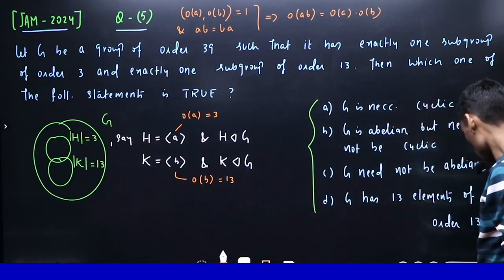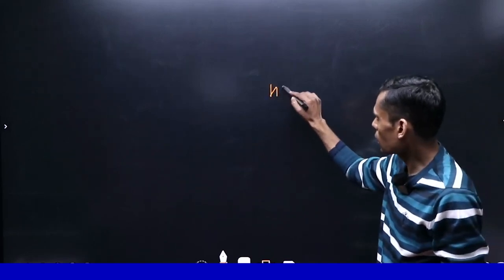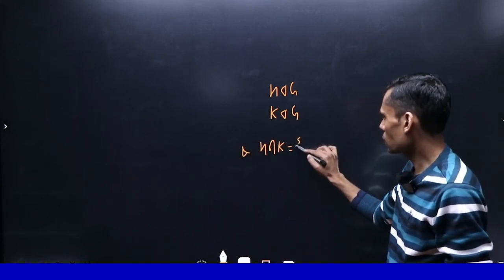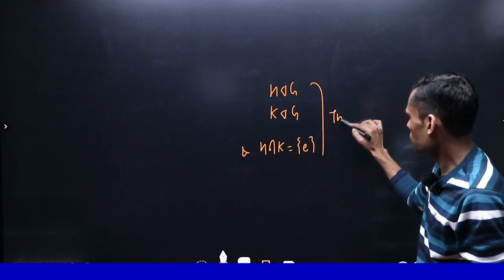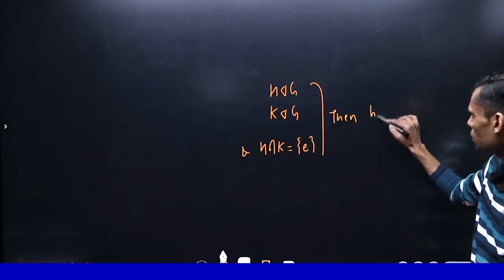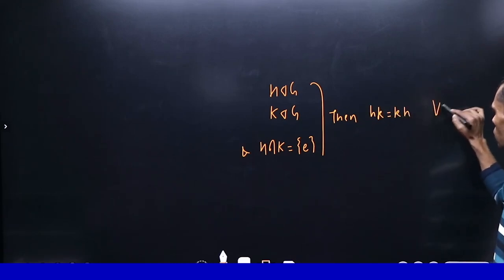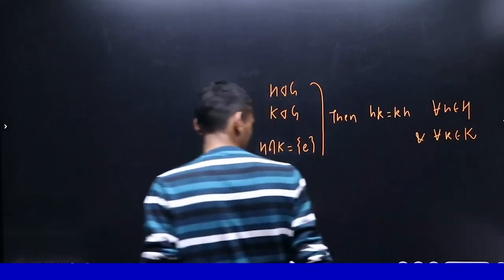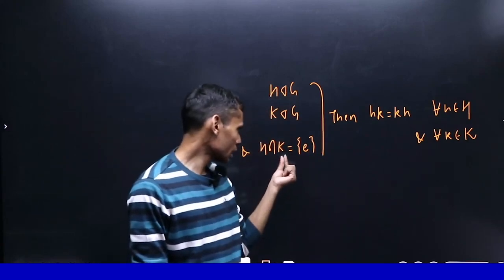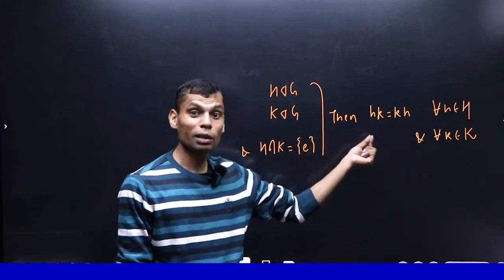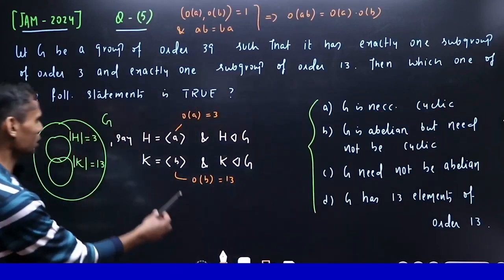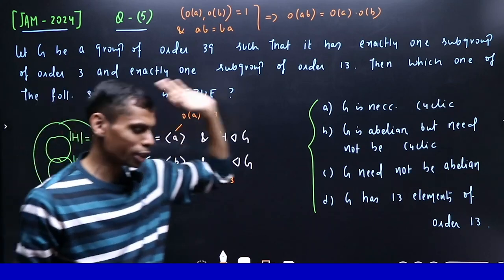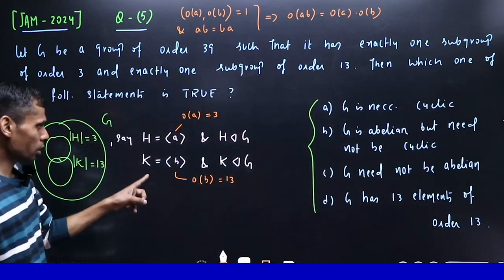The orders 3 and 13 are coprime. For commutativity, there's another result: if H normal in G, K normal in G, and H intersection K is identity, then elements commute. Here order is 3 and 13, so intersection divides both - only 1 divides both 3 and 13, so H intersection K has order 1, meaning identity.